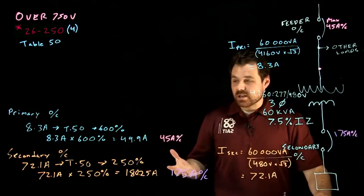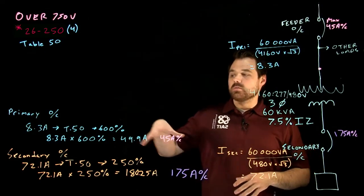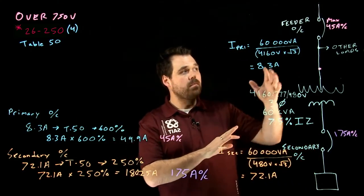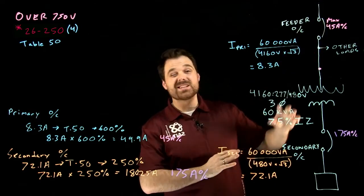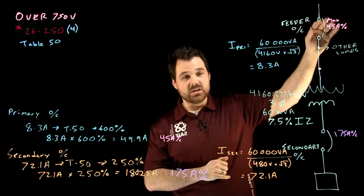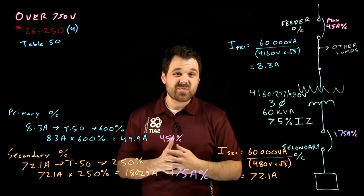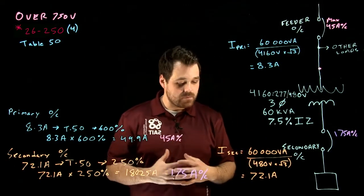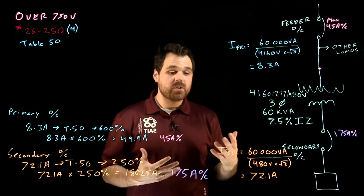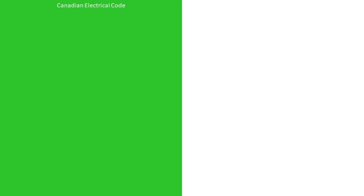That is how we would size our primary and secondary. Subrule 3 was the one that told us if our branch circuit is good, then we don't require an additional individual primary overcurrent. I hope this was helpful. Feel free to check out my other videos. Thanks for watching.